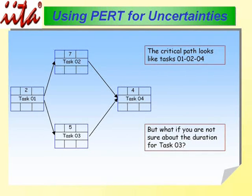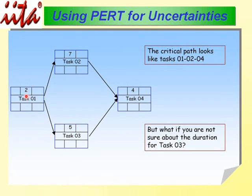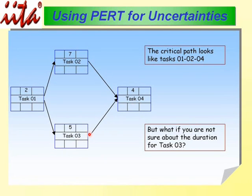Now let's look at some examples of how uncertainty is treated. Task 1 has a duration of 2, Task 2 a duration of 7, and Task 4 a duration of 4. Adding these together: 2 plus 7 is 9, plus 4 is 13. Task 3 has a duration of 5; adding through that path gives 7 plus 4 = 11. So Task 1, Task 2, and Task 4 form the critical path. But if we are not sure of the duration of Task 3 — if it becomes 8 — then that path becomes critical, changing the game plan. So we need to find an estimate for Task 3 rather than treating it as uncertain.